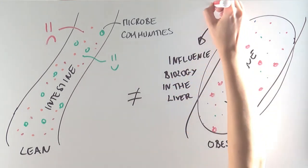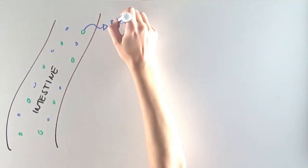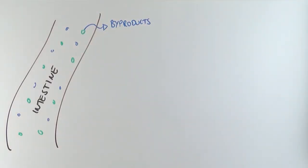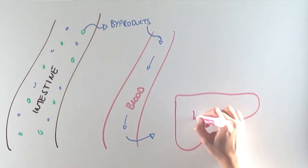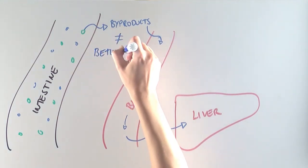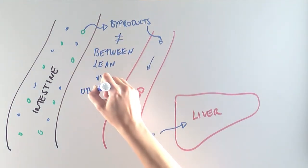But how could something in the intestine influence the liver? Well, it turns out that bacteria produce byproducts that leave the intestine, enter the circulation, and travel directly to the liver. So the scientists wondered if bacteria from obese mice produce different byproducts than bacteria from lean mice.